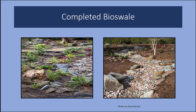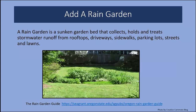Now we turn our attention to rain gardens. A rain garden is a sunken garden bed that collects and treats stormwater runoff from rooftops, driveways, sidewalks, parking lots, streets, and lawns. It's a landscaped area in a basin shape designed to capture runoff and settle and filter out sediment and pollutants. Perhaps most important, it's a great way of retaining moisture on your landscape. Runoff is piped, channeled, or directed to the basin where it is temporarily stored until it seeps into the soil. I've provided a link to the Rain Garden Guide, an excellent step-by-step resource.